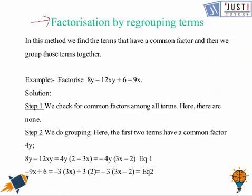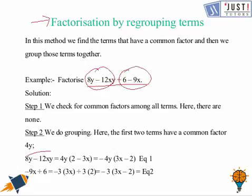Now we move ahead to factorization by regrouping terms. If we have been given a long equation, we first regroup the like terms together and unlike terms to the other side. Here, 8y − 12xy forms the first group, and 6 − 9x is the second group. From the first group, 4y is common, leaving (2 − 3x). From the second group, 3 is common, leaving (2 − 3x).